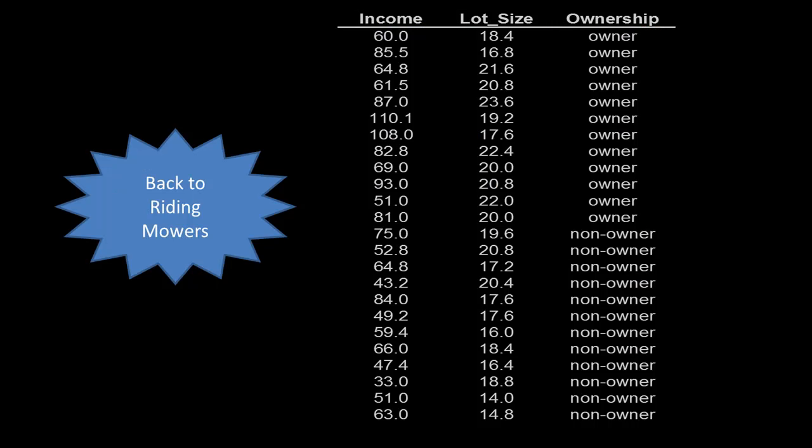So once again, we're going to illustrate what we are doing with our riding mowers data. By now, you're already familiar with this data. We've got information on income and lot size for a bunch of people, and we also know whether they own a riding mower or not. This is the complete data set — it's a toy data set used for illustration purposes. We will not actually partition the data at all because we have too little data; we'll just use it to understand the process of building a tree.